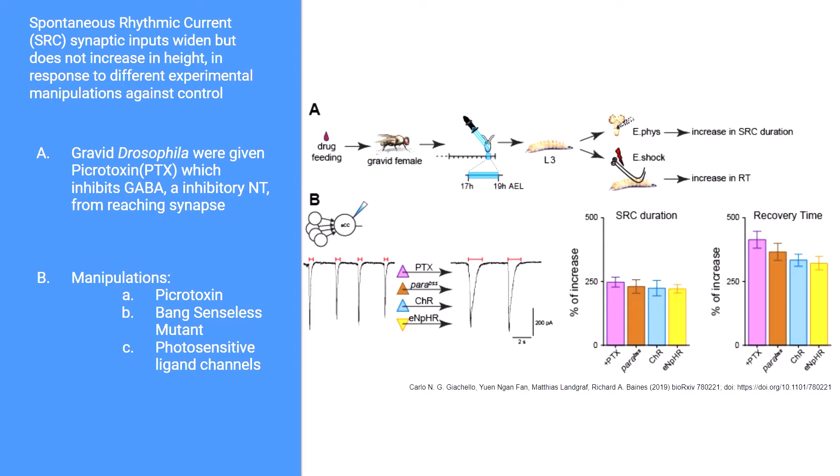As mentioned before, PTX stands for the picrotoxin experiment. The next experiment is labeled para bss — the para bss experiments were conducted using genetically mutated Drosophila. These mutations cause voltage-gated sodium channels to become more sensitive.